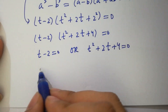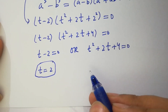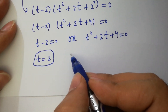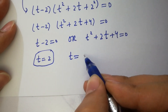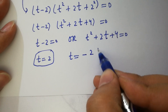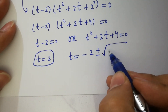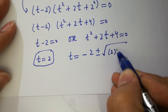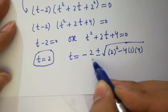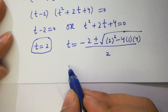t equals 2, which is also a real solution. And here we have a quadratic equation, so applying the quadratic formula: t equals minus b, which is 2, plus or minus square root of b squared, 2 squared, minus 4 times a times c, over 2.